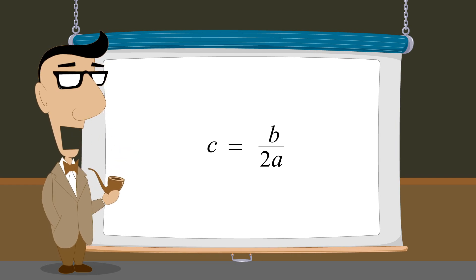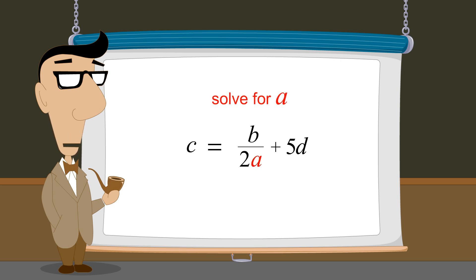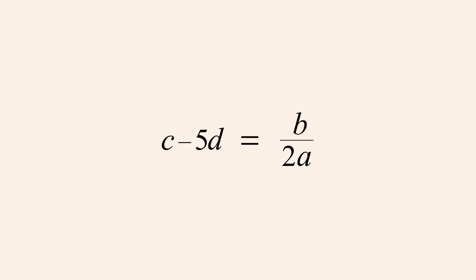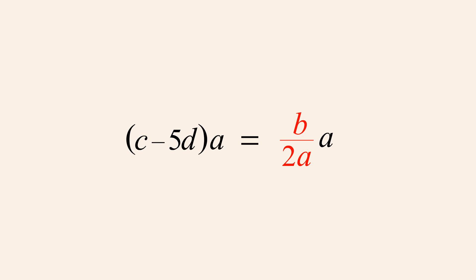As another example, let's start with a similar equation except with an additional term on the right side, and solve for the variable A. To rearrange the equation so that A is alone on the left side, we start by subtracting the term 5D from both sides of the equation, which allows us to cancel the 5D term on the right. Since we want the variable A alone on the left, we need to move A out from the denominator of the fraction on the right. To do this we multiply both sides of the equation by A, which is the same as multiplying the fraction's numerator by A, and we can then cancel the A's in the numerator and denominator.